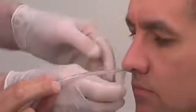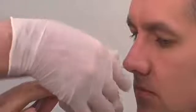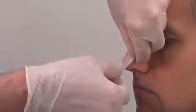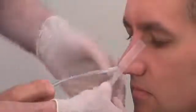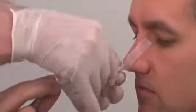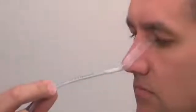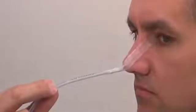Use the steri-strips to attach the tube to the nose by applying one end to the nose and wrapping the other end around the tube. Ensure that the tube is not applying excessive pressure against the nostril as this can lead to necrosis.